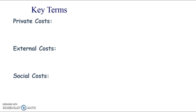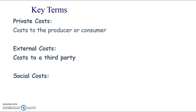Before we go into what it is, we have some key terms to learn. This is actually a bit of a recap from when you did negative externalities and positive externalities. We've got private costs, which are costs that occur to the producer or the consumer — the people taking part in the decisions, deciding whether to consume or to produce. And external costs, which are costs to third parties — people that are not involved in the decision-making. Social costs are the private costs plus the external costs; they are just the full cost of the activity.